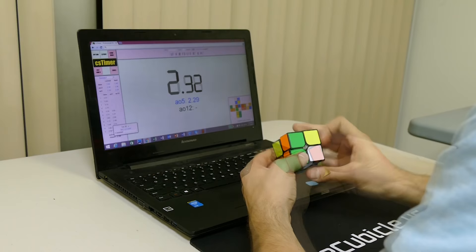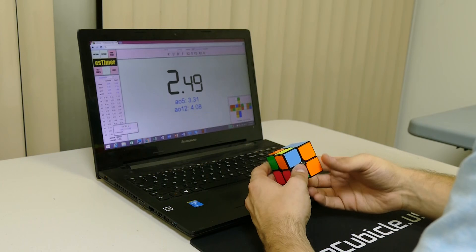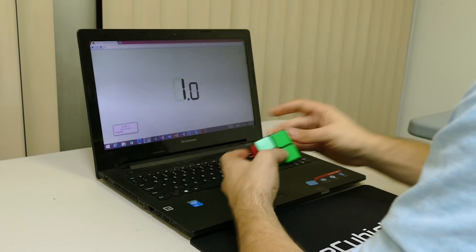We then added some Lubicle Speedy on top of the Traxxas, and this fixed the problem. I was able to turn pretty fast and not worry about locking up or overturning. We believe this combination is the perfect balance between speed and stability, and that it is suitable for all 2x2 solvers at any skill level.